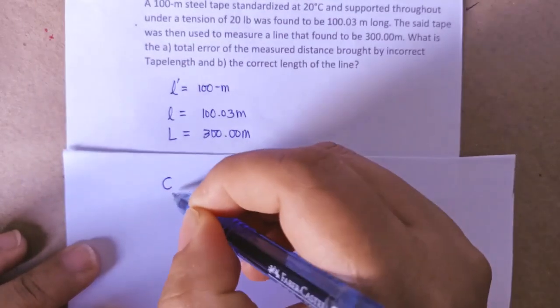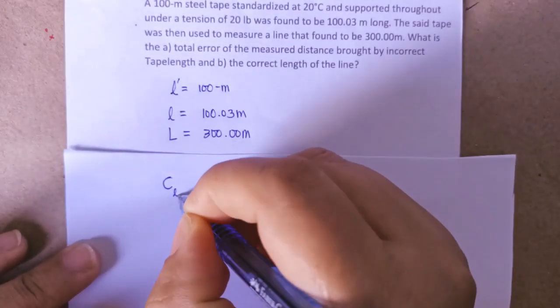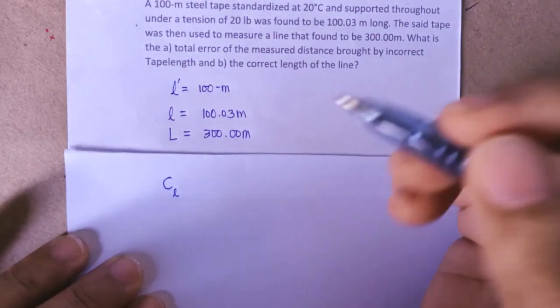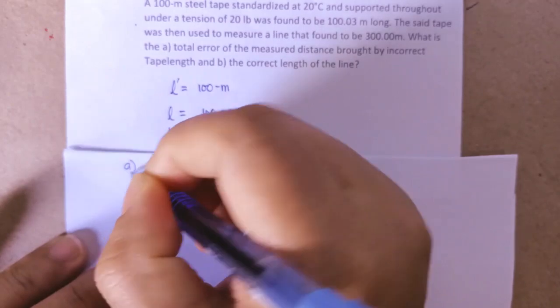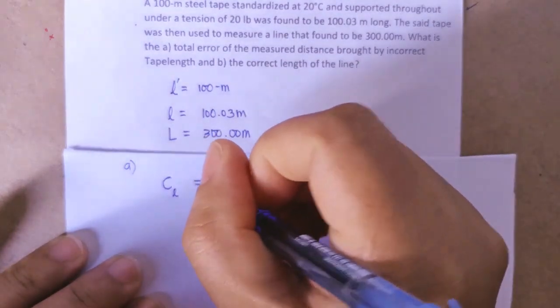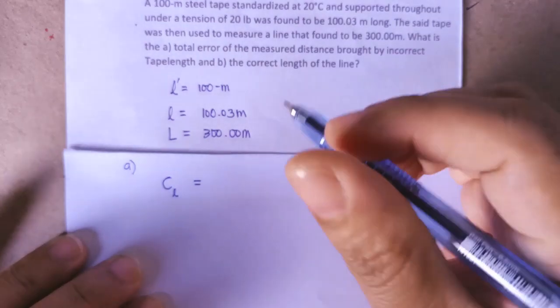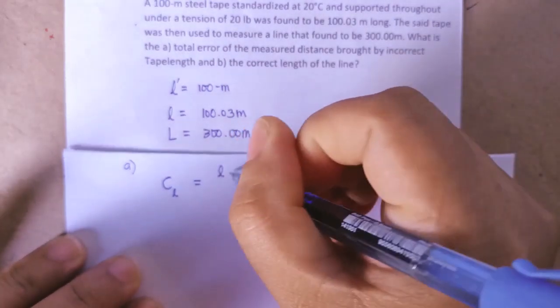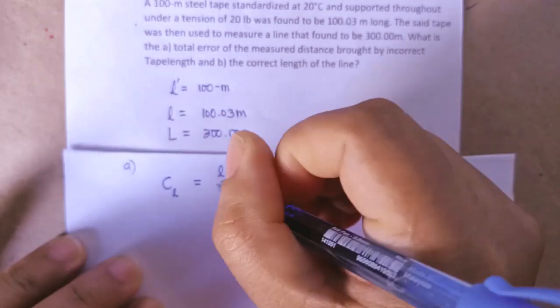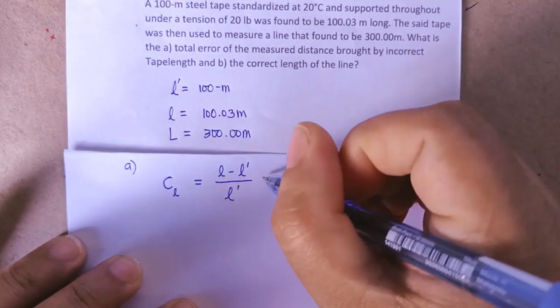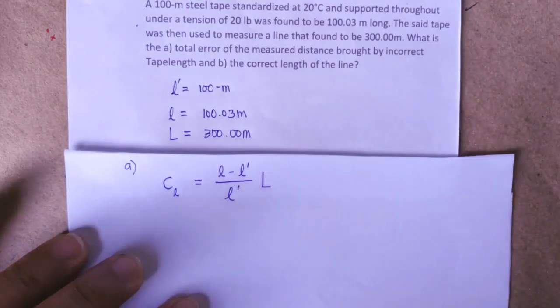We have the formula to get the error due to incorrect tape length, which is for item a: actual length minus the nominal length over the nominal length, and you have the measured line.